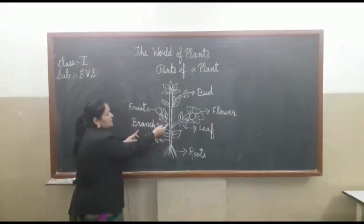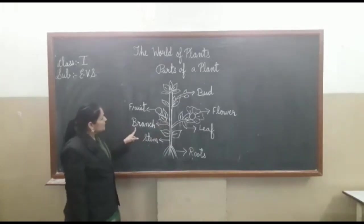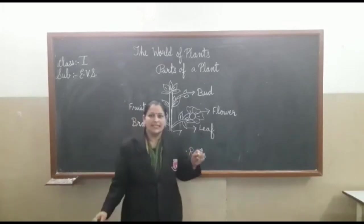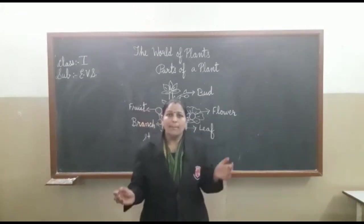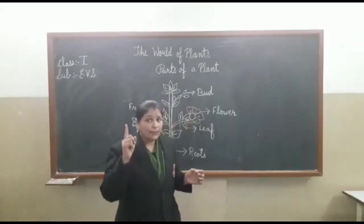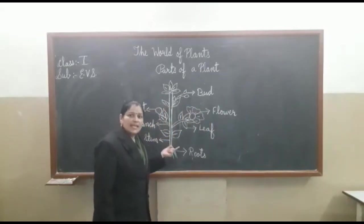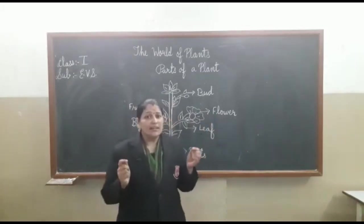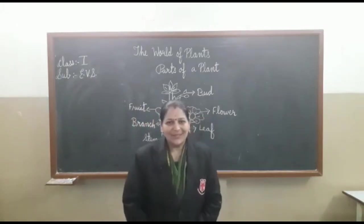What is this? This is a branch. B-R-A-N-C-H. Branch. So students, these are the different parts of a plant. The main thing which holds firmly is the stem — stem holds the plant firmly. Learn well the different parts of a plant and go through the spellings also. Thank you.